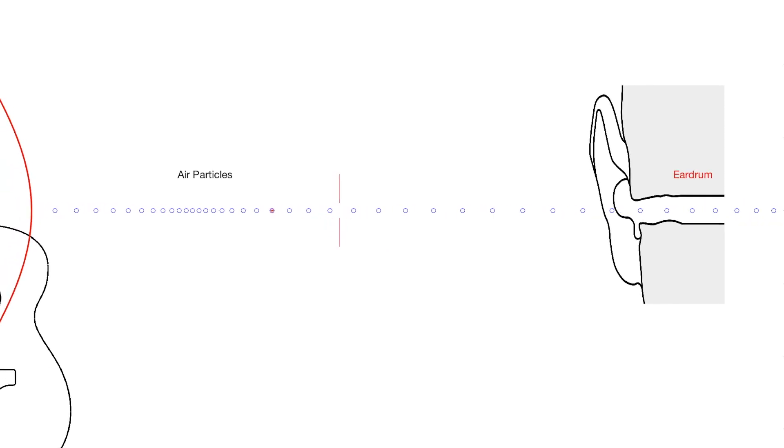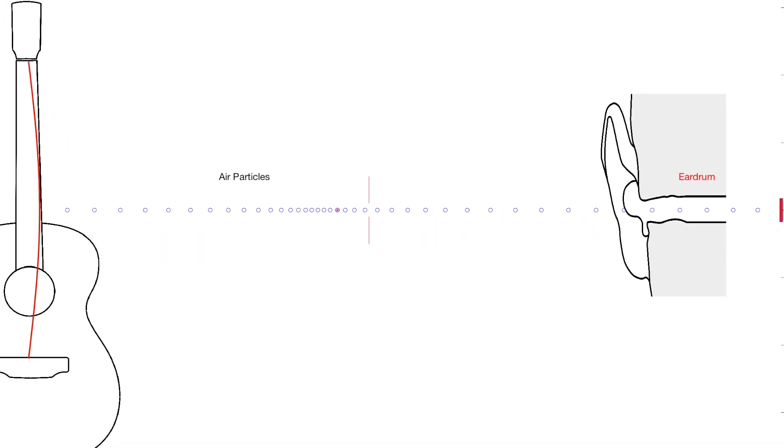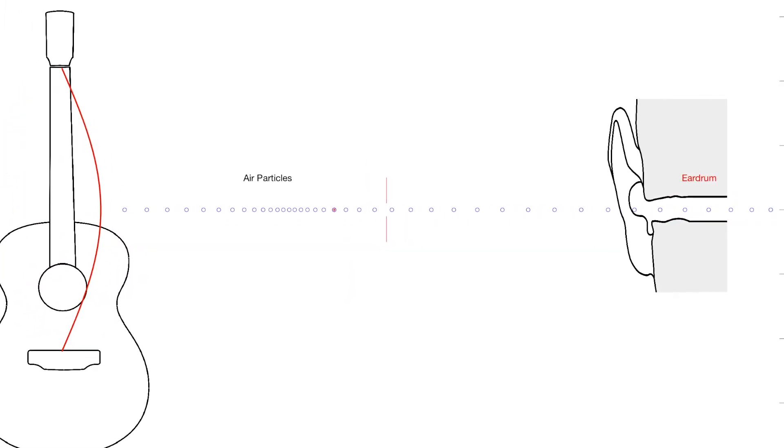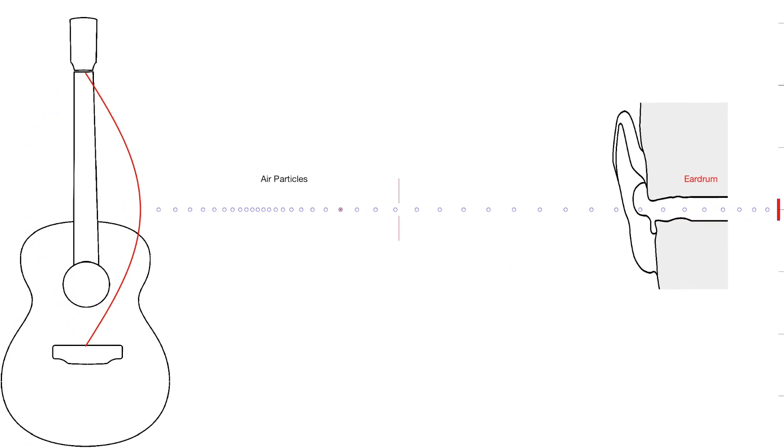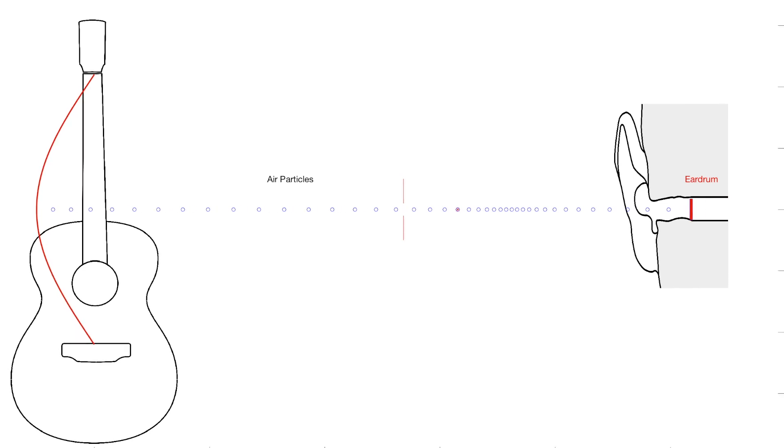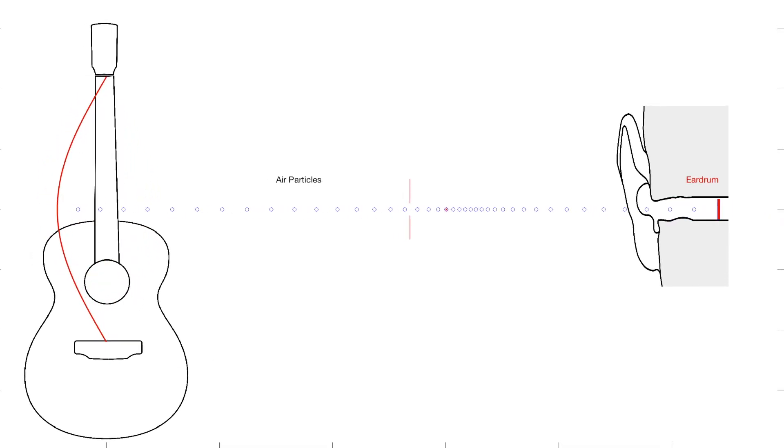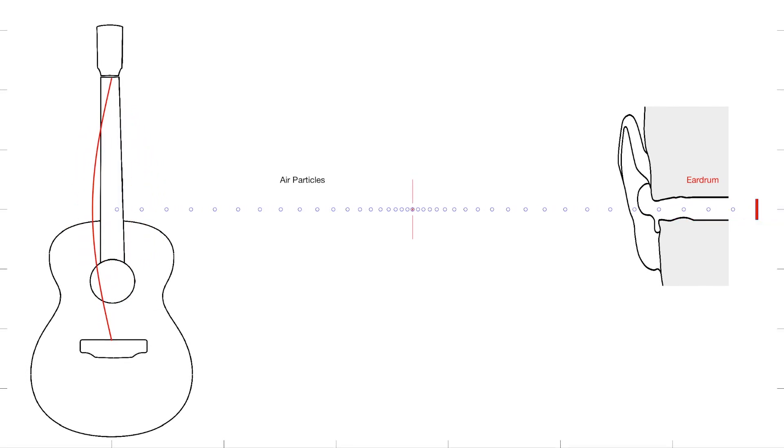And that something, as it moves, pushes and pulls the air particles around it that bump into each other and cause a chain reaction that eventually pushes and pulls your eardrum in and out of your head. This causes a signal to go to your brain, which means you can hear the sound of a guitar, a bird chirping, a baby crying, or a car driving by.